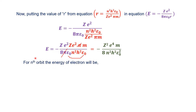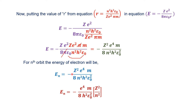For any nth orbit, the energy formula is: En equals minus z²e⁴m divided by 8n²h²ε₀². The terms e⁴, m, 8, h², and ε₀² are all constant and common. The only changing values in this equation are z² (the proton number) and n² (the shell number). So we separate these variable values from the combined constant terms.